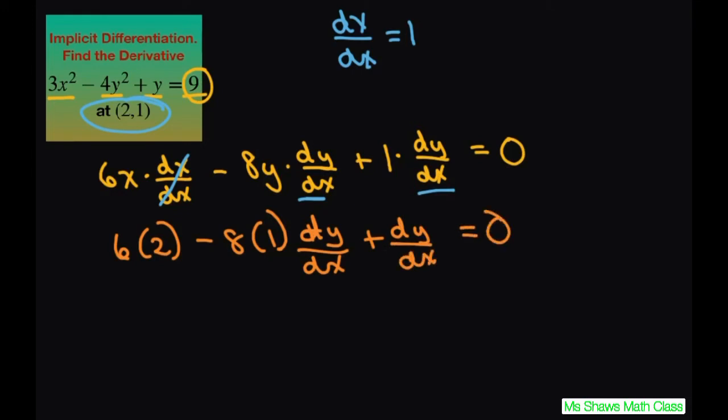So now we have 12. 8 minus 1 is negative 7 times the derivative of y with respect to x. Now we can solve for this.